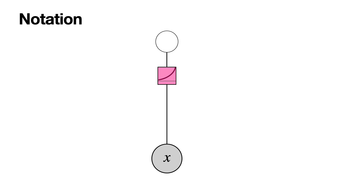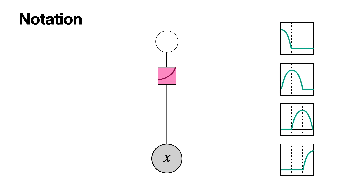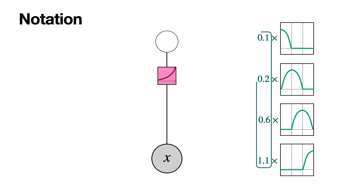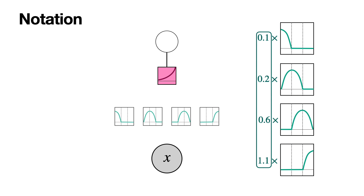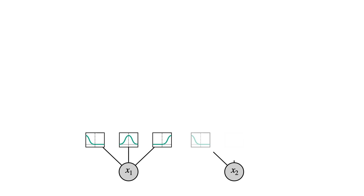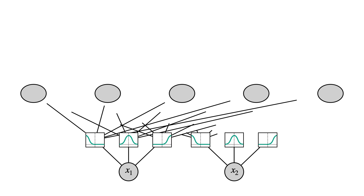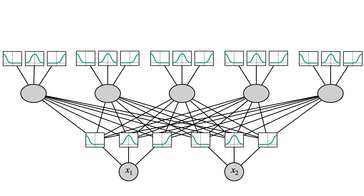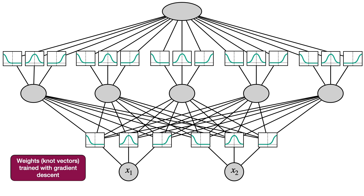The notation works as follows: for an edge, we take the splines we're going to use — say four quadratic splines — and if we multiply each one by a certain number, that's the knot vector. We put the four splines in between and connect them with edges, and the knot vector numbers are recorded as the weights of our new neural network. So a full KAN has an input layer where each node connects through a bunch of splines — say three for simplicity — into the next layer, then more splines into another layer, and so on. The trainable parameters are the knot vectors, trained using gradient descent just like a regular neural network.